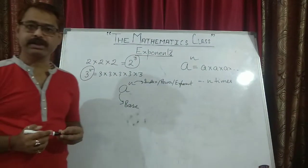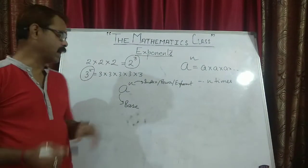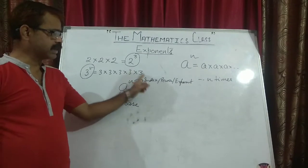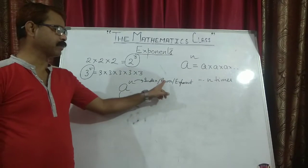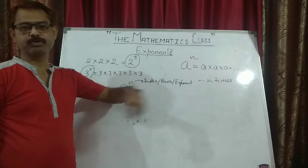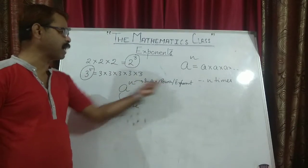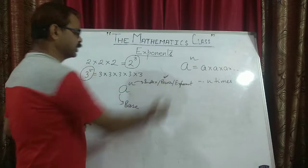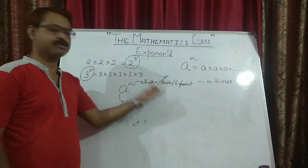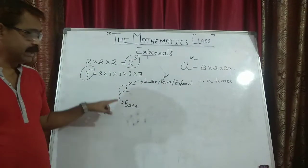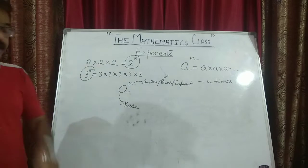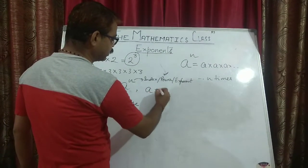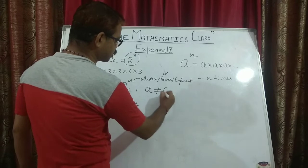Suppose an expression is given as a to the power n. Then n is known as index, sometimes power, sometimes exponent — you can use any word. Generally we use 'a to the power n', so we use the word power. And what is a? a is base. Remember that a is never equal to 0.